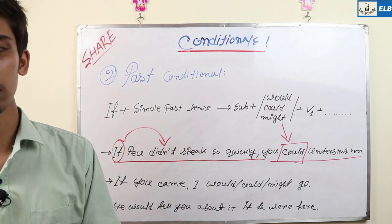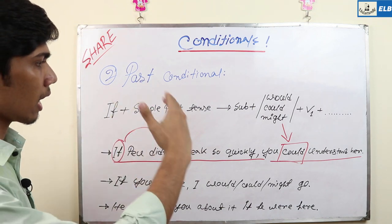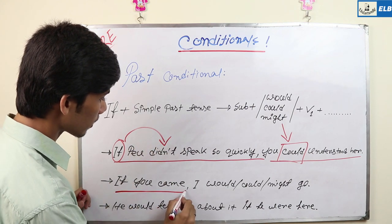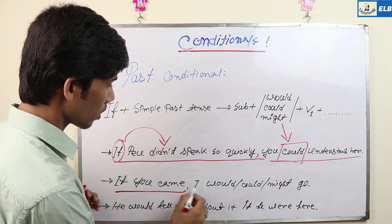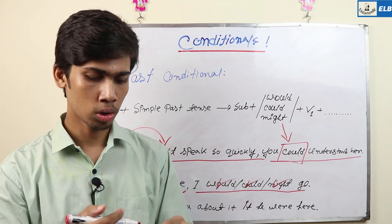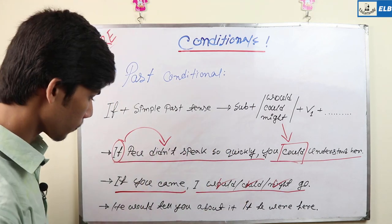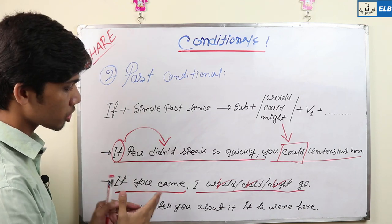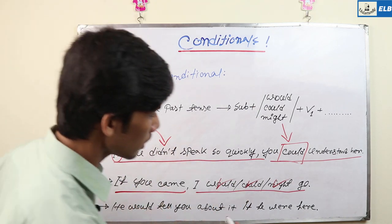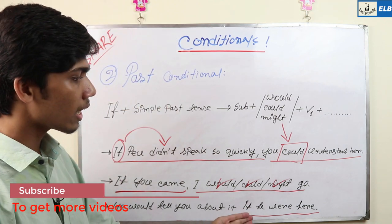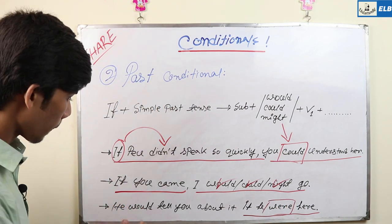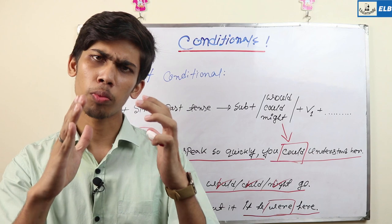The next example: if you came — past tense 'came' — I would go, I could go. And the last one: he would tell you about it if he were here — if he was here, past tense. He would tell you about it.